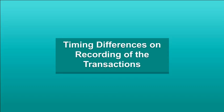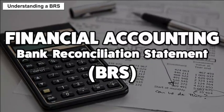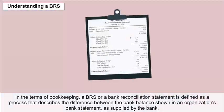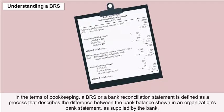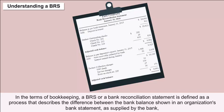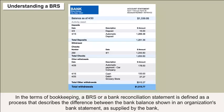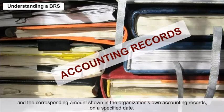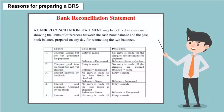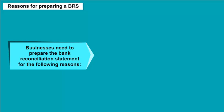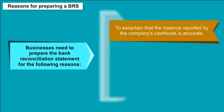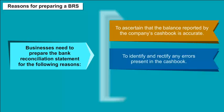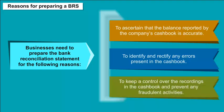Timing differences and understanding a BRS: In bookkeeping terms, a BRS is defined as a process that describes the difference between the bank balance shown in an organization's bank statement as supplied by the bank and the corresponding amount shown in the organization's own accounting records on a specified date. Businesses prepare the BRS to ascertain that the balance reported by the company's cash book is accurate, to identify and rectify any errors present in the cash book, and to keep control over recordings in the cash book and prevent any fraudulent activities.